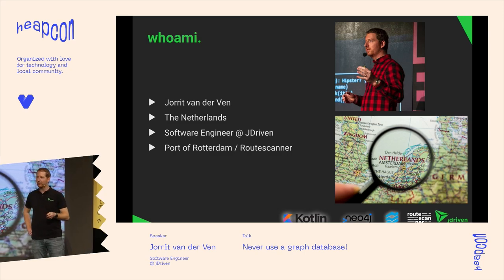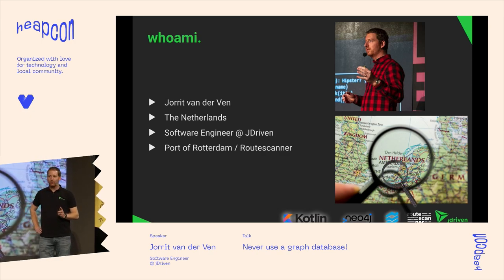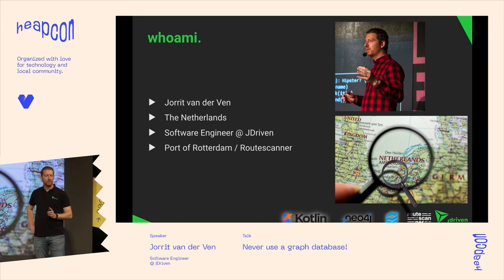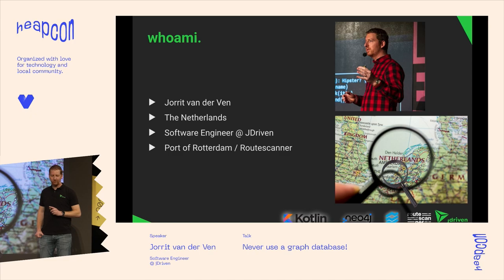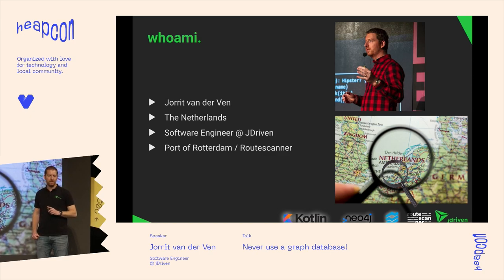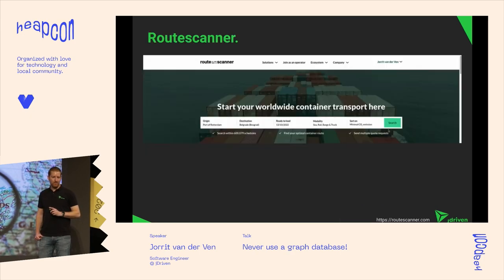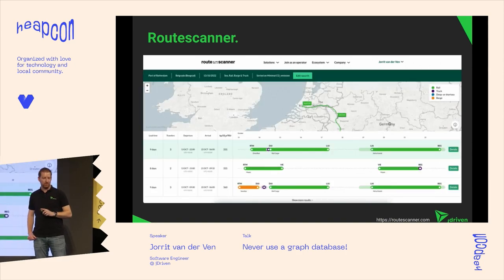First, who am I? I'm Jord van de Ven, I live in the Netherlands near Rotterdam. I work at a company called J-Driven, which is a software consultancy company from the Netherlands. They're awesome — well, they're paying me to be here, so thank you for that. For the last four years I've been doing an assignment at Port of Rotterdam, and one of those assignments was Route Scanner, which was actually the first time in my career that I encountered a graph database.